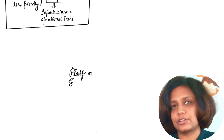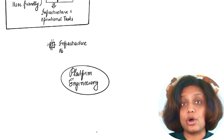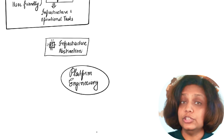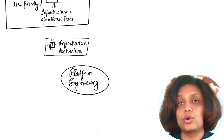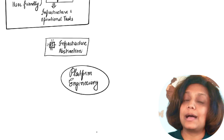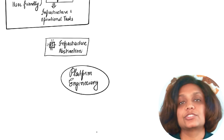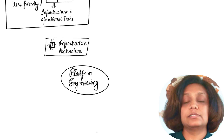Let's break down the key technical components and responsibilities of platform engineering. Infrastructure abstraction is the first one. Platform engineers create layers of abstraction over raw infrastructure resources like compute, storage, and networking using infrastructure as code. These tools include things like Terraform, CloudFormation, and Pulumi. This abstraction allows application developers to consume pre-configured, data-compliant infrastructure without needing to understand the underlying details.